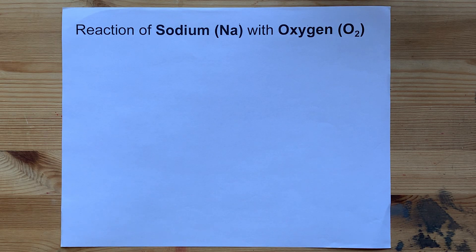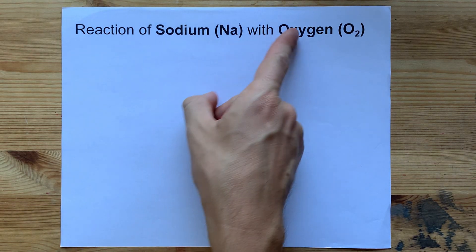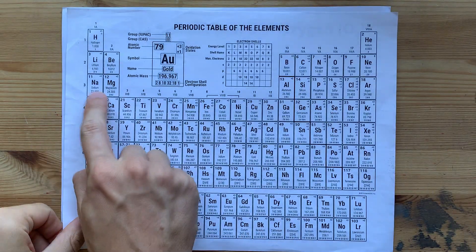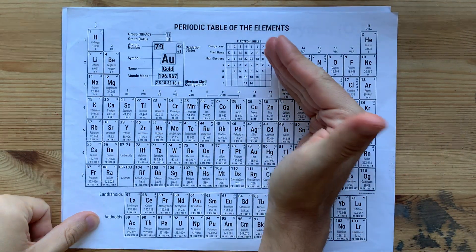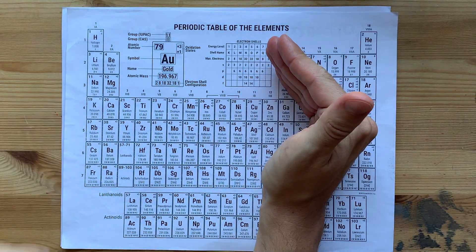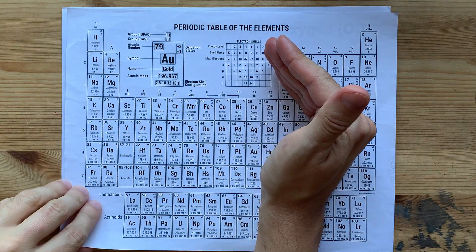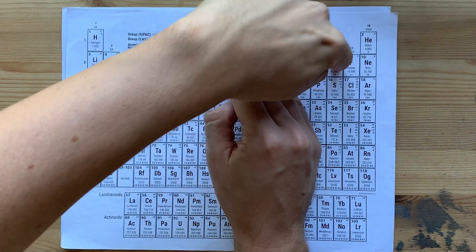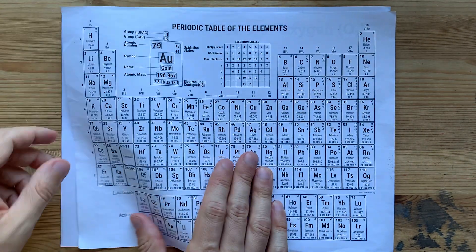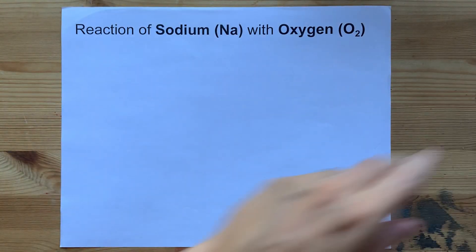You're being asked about the reaction between sodium metal and oxygen gas. Sodium is a metal, and I know that because it comes from the left side of the periodic table. And oxygen is a non-metal — I know that because it comes from the right side of the periodic table.